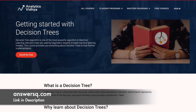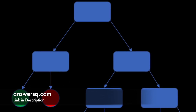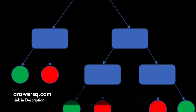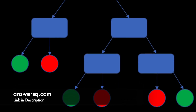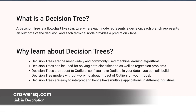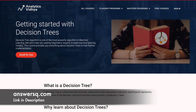Getting Started with Decision Trees: A decision tree is a flowchart-like structure in which each node represents a decision. Each branch represents the decision's outcome and each terminal node provides a prediction or label. One of the most powerful algorithms in machine learning is the decision tree algorithm. Beginners and experts both use decision trees to build machine learning models. This course will teach you everything you need to know about decision trees and how to implement them in Python.